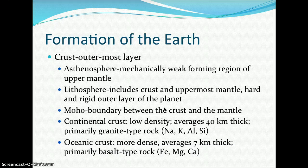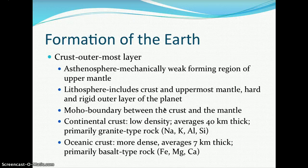There are two basic types of crust: oceanic crust and continental crust. Continental crust has a lower density, averages about 40 kilometers in thickness, and is primarily granite rock made up of sodium, potassium, aluminum, and silicon. Oceanic crust is more dense, averages about 7 kilometers thick, and is primarily basalt rock made up of iron, magnesium, and calcium.